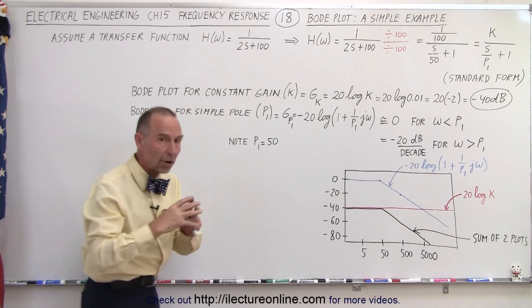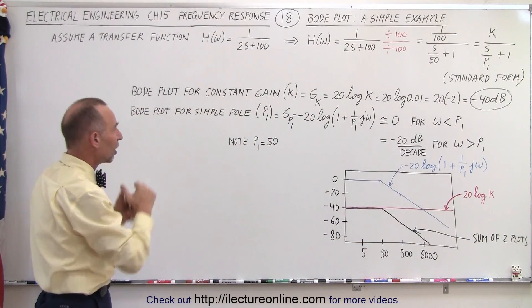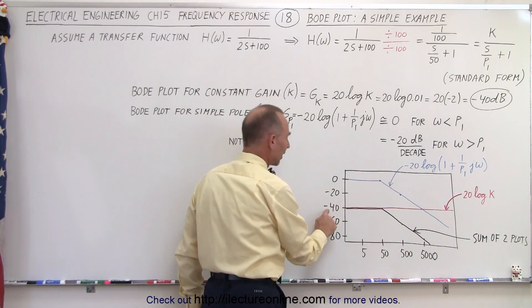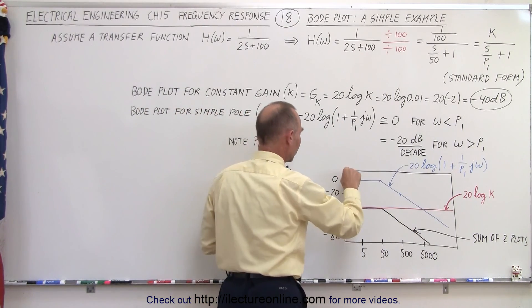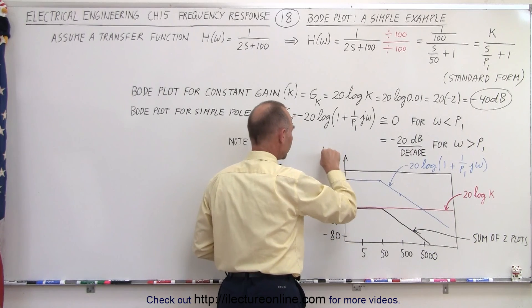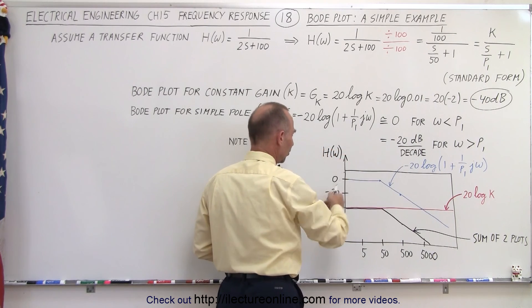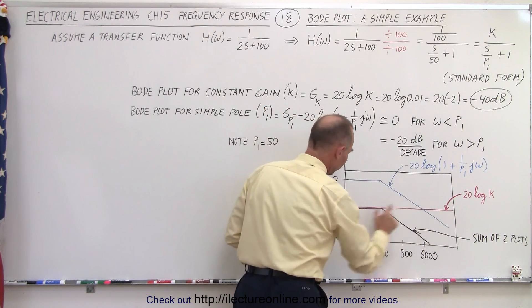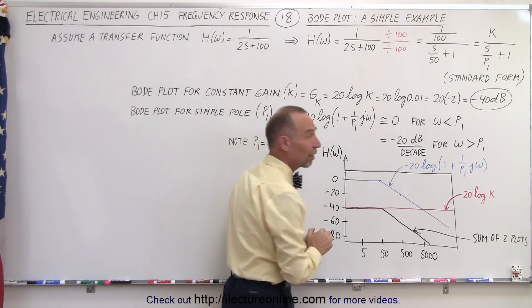So if we're going to draw a Bode plot of just the constant gain alone we get this red line right here at minus 40 dB. Now notice this here is a transfer function. This here is the magnitude in dB and notice that the constant term gives us a minus 40 dB in the transfer function.